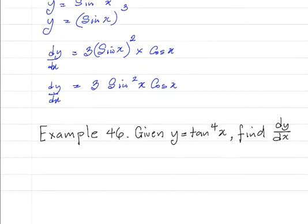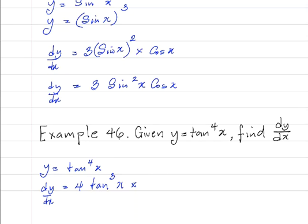Example 46: y is equal to tan to the fourth power of x. This is similar. dy by dx: the power comes to the front, giving 4 tan cubed x, and we multiply by the differential of the inside function. The inside function is tan x; when you differentiate tan x you get sec squared x. So dy by dx is equal to 4 tan cubed x sec squared x.